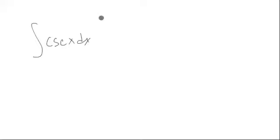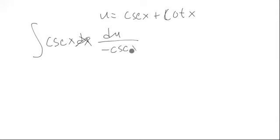So let's choose u to be cosecant x plus cotangent x. And if we do that, replace this with du over negative cosecant x cotangent x minus cosecant squared x.